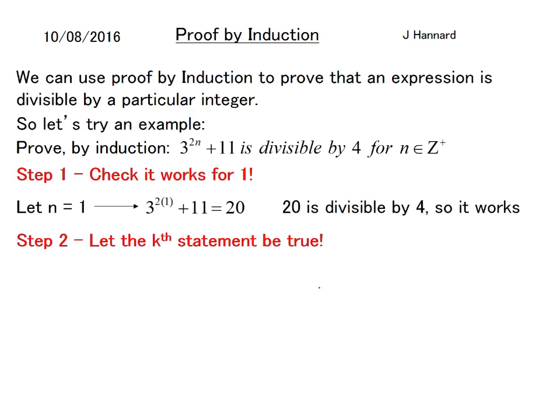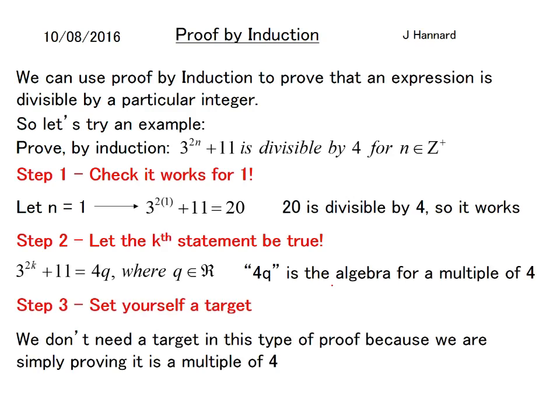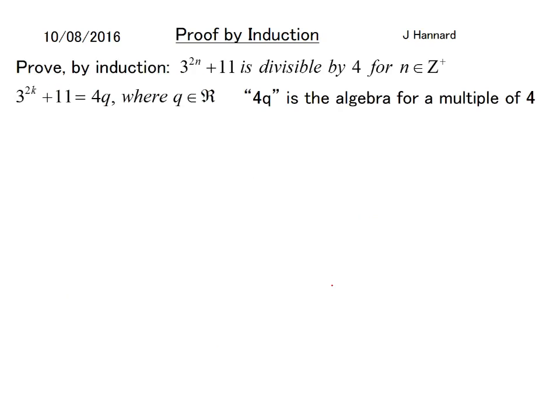Step two, let the kth be true. So remember that is where we rewrite our nth statement and put in a k instead. But we say that equals 4q because if it's divisible by 4 it must be a multiple of 4. So q is a member of the real numbers. So 3^(2k) + 11 equals 4q. So that is the secret with these ones. If it's divisible by nine it would be 9q, divisible by three, 3q and etc. So 4q is the algebra for a multiple of four. Step three, set yourself a target. We don't need a target in this type of proof because we're simply proving that it's a multiple of four.